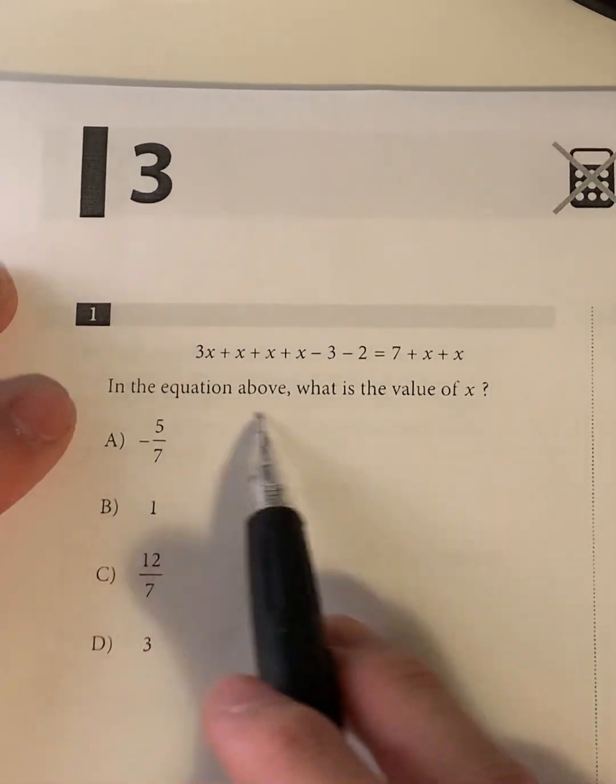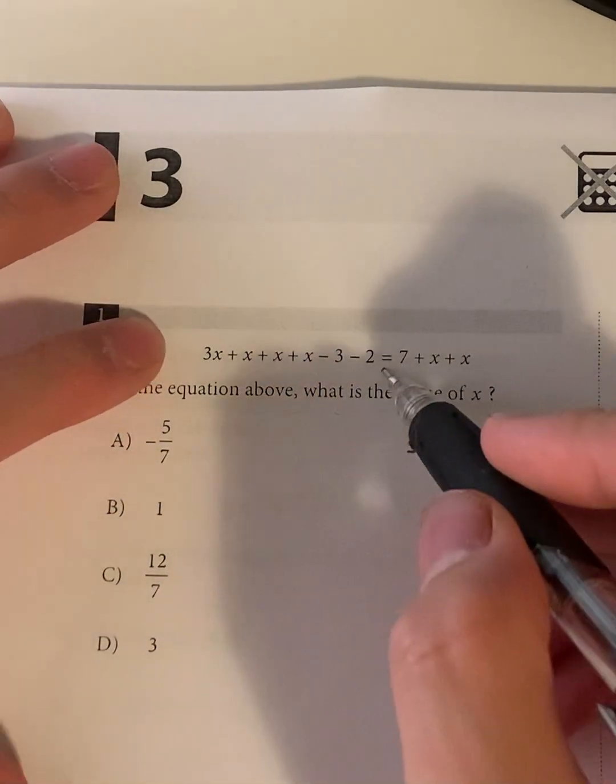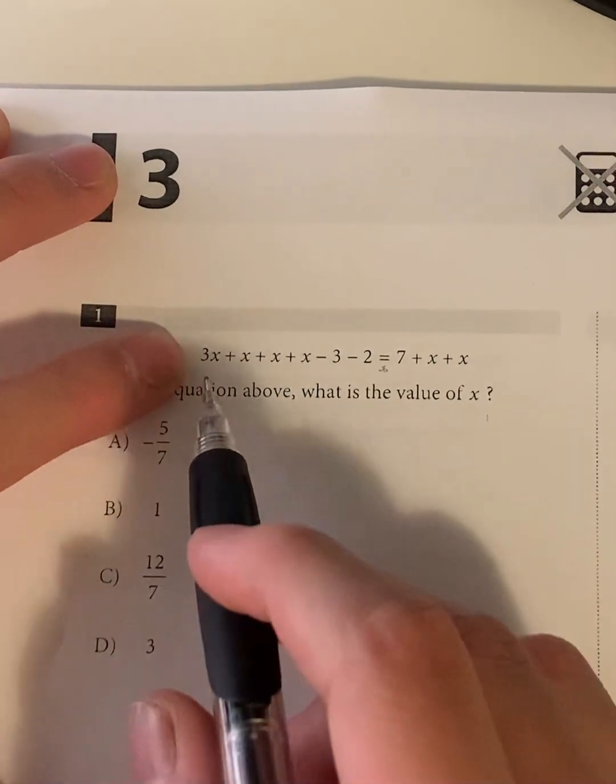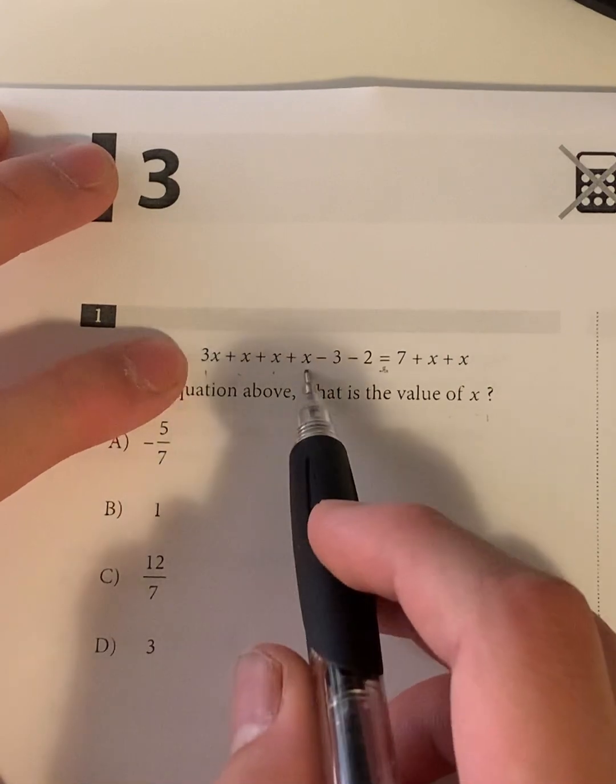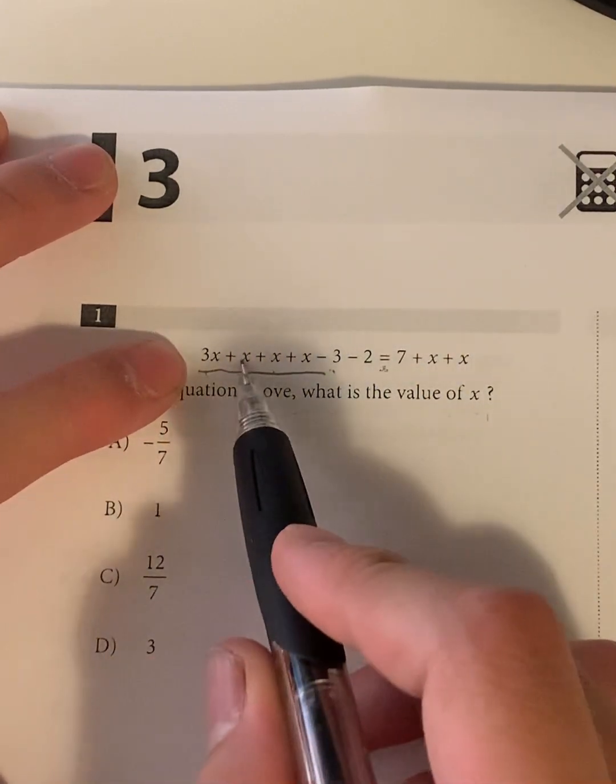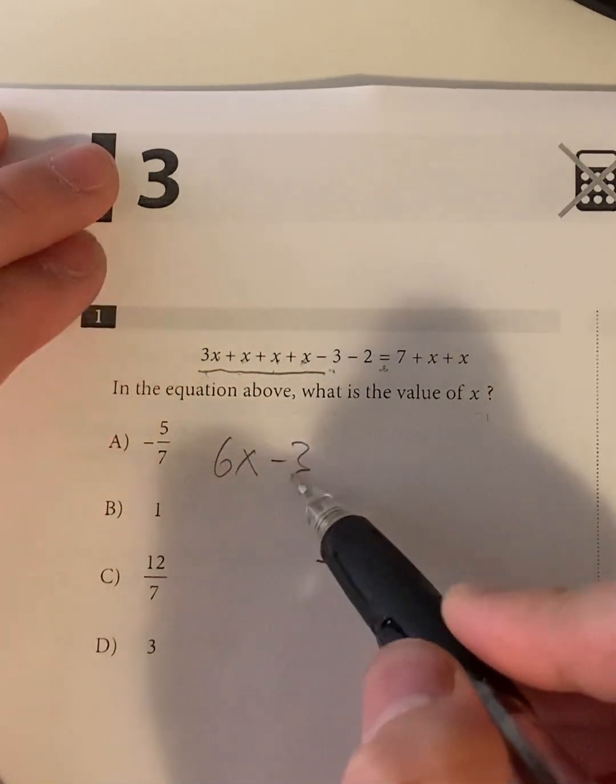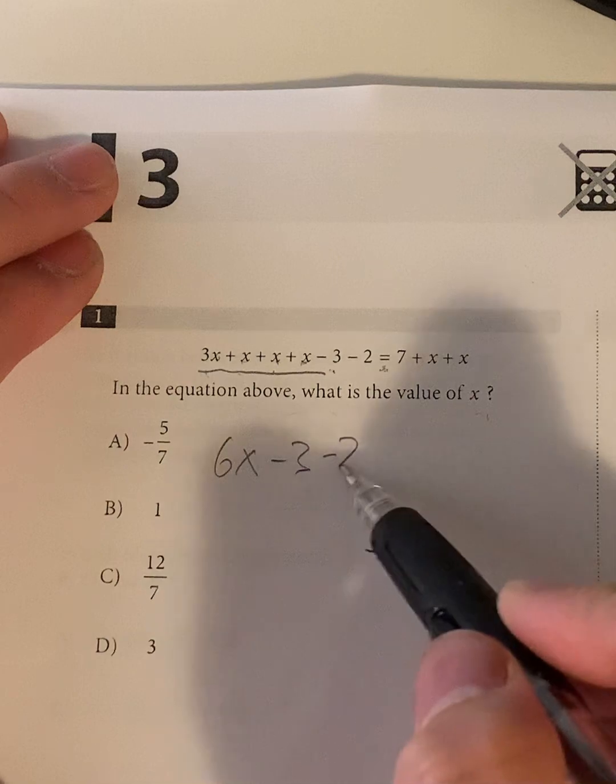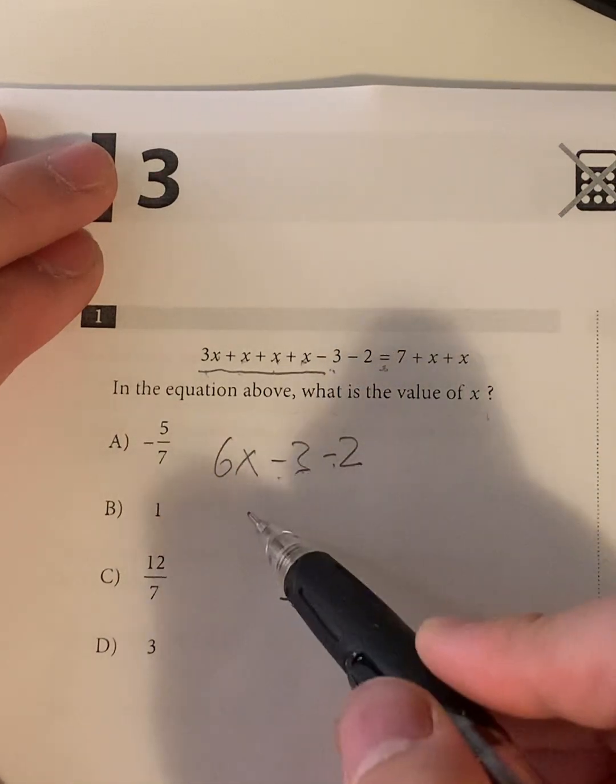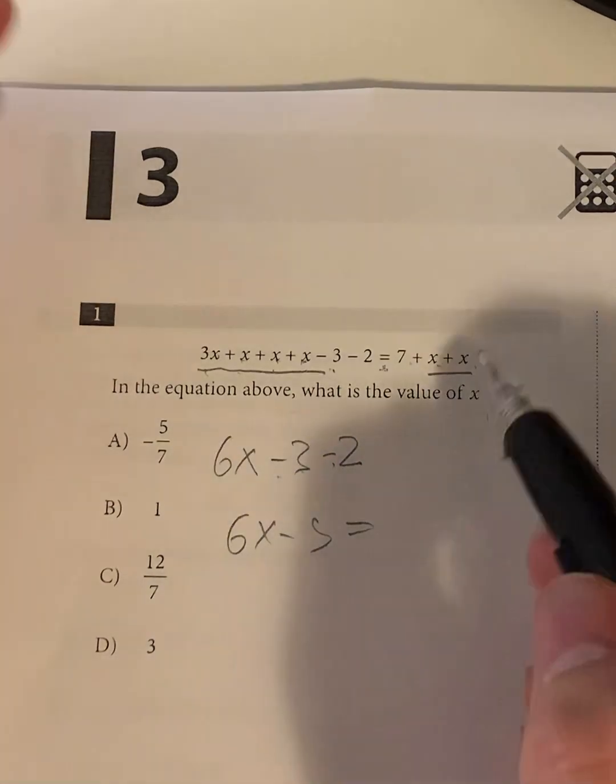Question 1. In the equation above, what is the value of x? So the first thing I would do is combine like terms on each side of the equation. So it's separated by this equals sign. So 3x plus x plus x plus x minus 3. So we can combine all these x's. How many x's are there? 1, 2, 3, plus 2, 3. So in total, there's 6x minus 3 minus 2. And negative 3 minus 2 should give us negative 5. That's equal to 7 plus x plus x. x plus x is 2x.